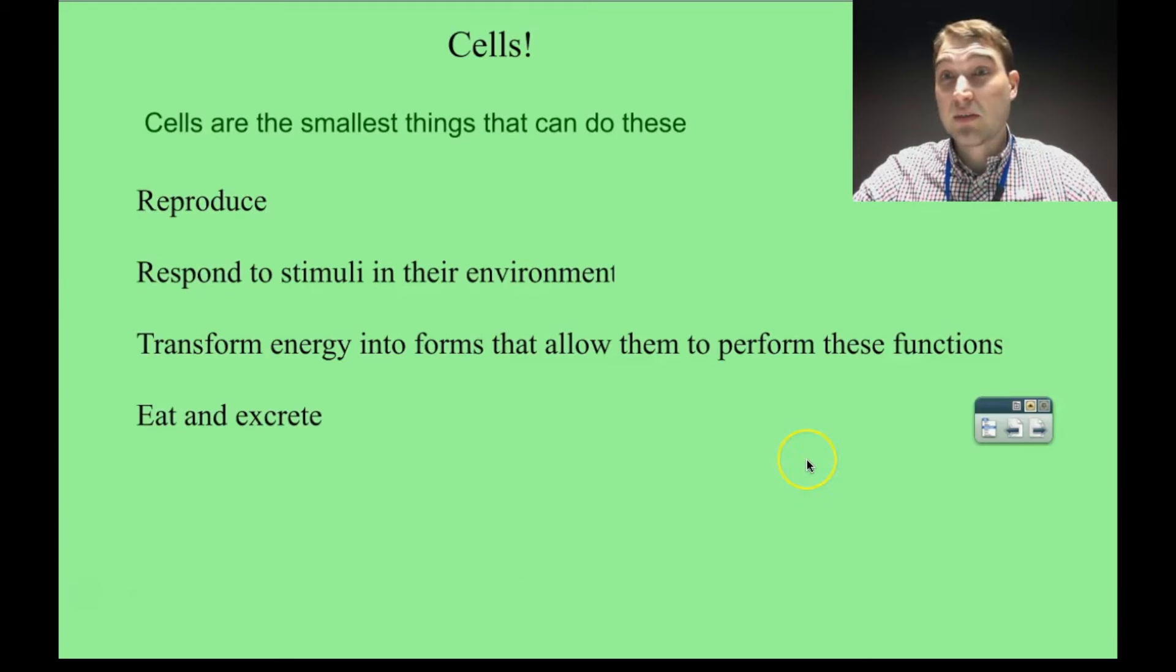So just restating: a cell is a living thing and all living things can do these. The cell is the smallest thing that can do these living things. So it can reproduce, respond to stimuli in the environment, transform energy into different forms, and take in compounds and excrete waste products.